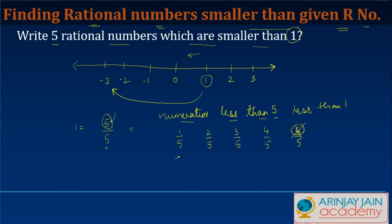I can have similar numbers with a negative sign because all the negative numbers which lie over here on the left-hand side of one in any case are smaller than one. Minus two by five, minus three by five, minus four by five and so on.